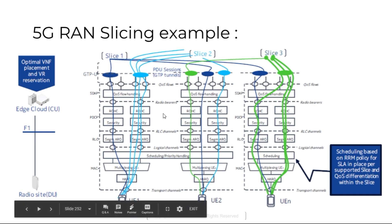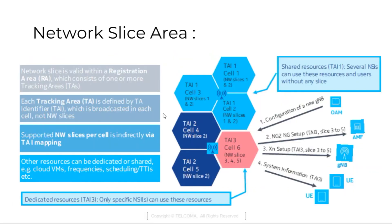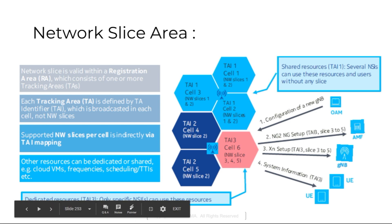Some slices may be available only in part of a network, and slice availability doesn't change with the UE's registration area. The number of network slices per cell is determined indirectly via Tracking Area Identifier mapping. A network slice is valid within a registration area which consists of one or more tracking areas. Each tracking area is identified by a TAI — Tracking Area Identifier — which is broadcasted in each cell.